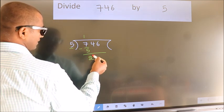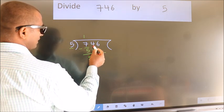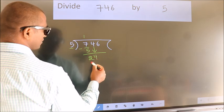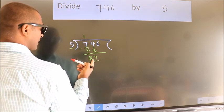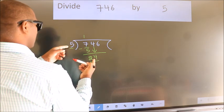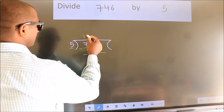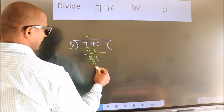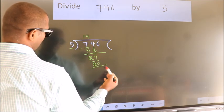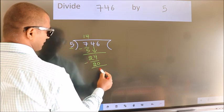After this, bring down the beside number. So, 4 down. So, 24. A number close to 24 in the 5 table is 5 fours 20. Now, we subtract. We get 4.